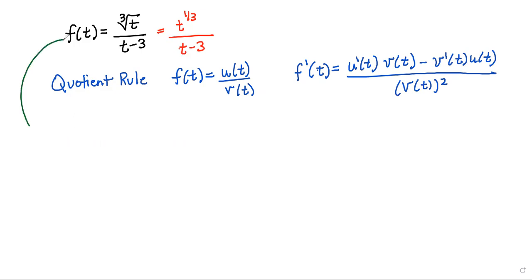So we want to solve it for our expression. f prime of t is going to be the derivative of the top, so we're going to use power rule. So we'll get 1/3rd t to the minus 2/3rds times the bottom, which is t minus 3. That's a denominator.